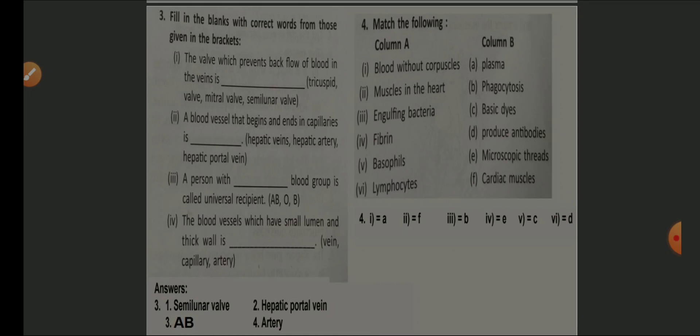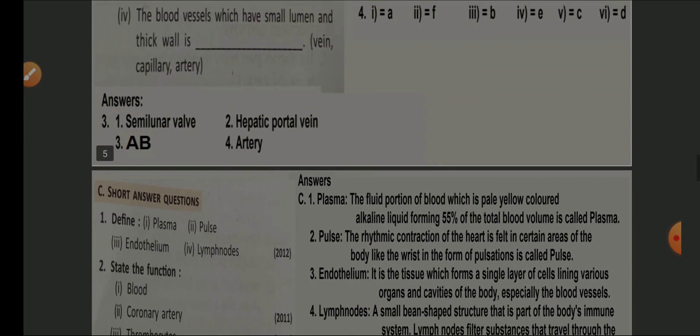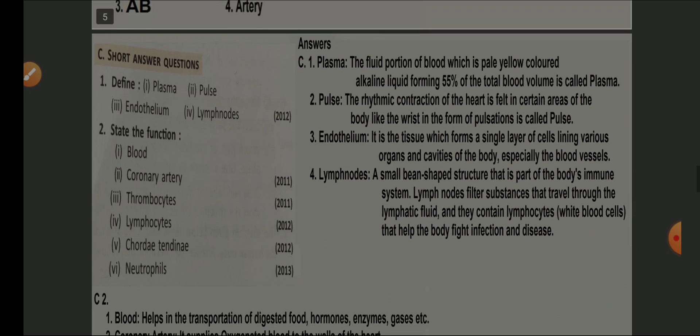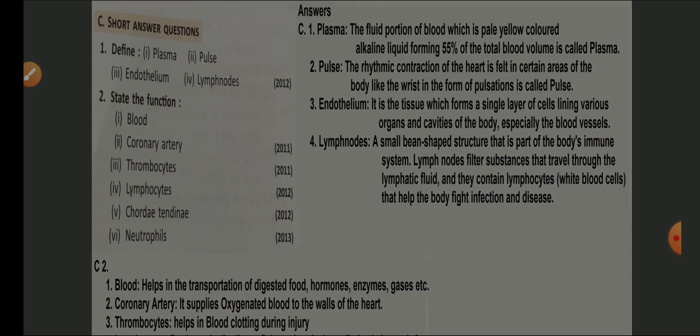Match the following: fluid without corpuscles — plasma. Muscles in the heart — cardiac muscles. The process of engulfing bacteria — phagocytosis. Fibrils — microscopic threads. Basophils — stained with basic dyes. Lymphocytes — produce antibodies.